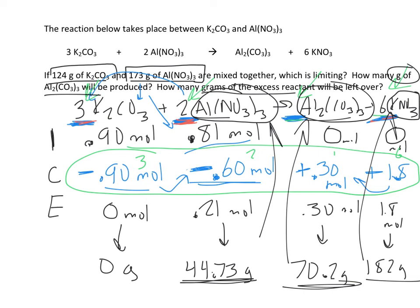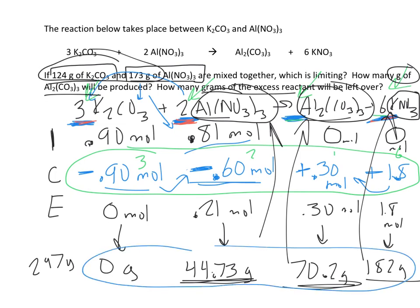Now a good check is we have this thing called the law of conservation of mass, which says that mass is never created or destroyed in the reaction. So at the beginning of all this, I had 124 and 173 grams of matter, which is 297 grams. If I add up all of these final masses, 44.73 plus 70.2 plus 182, I get 296.93, which within rounding error, we did do a lot of rounding, is pretty much the same thing.